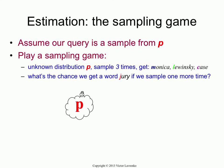How are we going to do this? One way to think about this is we're going to play a sampling game. We have some unknown distribution p. We know what words are in it, but we don't know the parameters or the probabilities of the words. The game we play is we sample from it three times. We sample once, get Monica. Sample a second time, get Lewinsky. Sample the third time, get case.